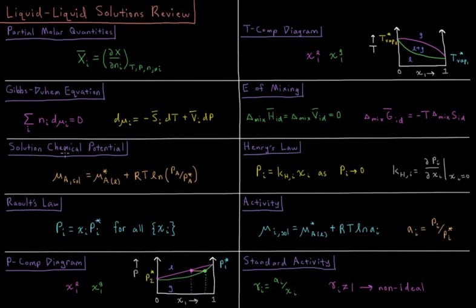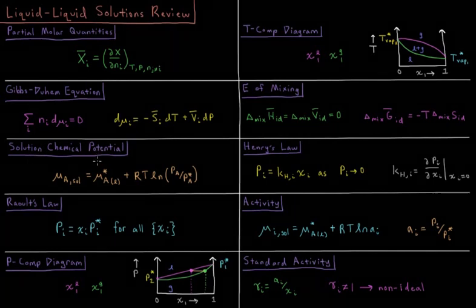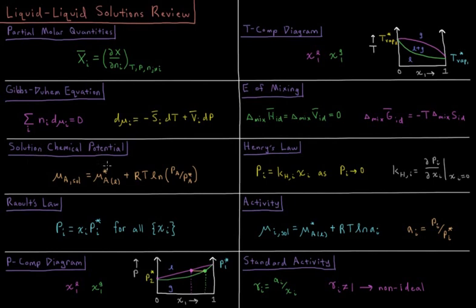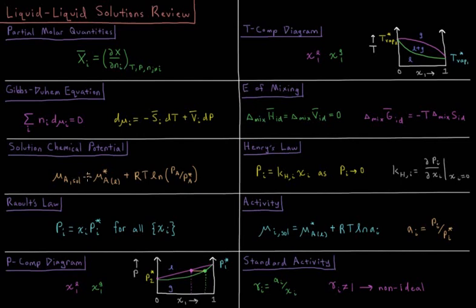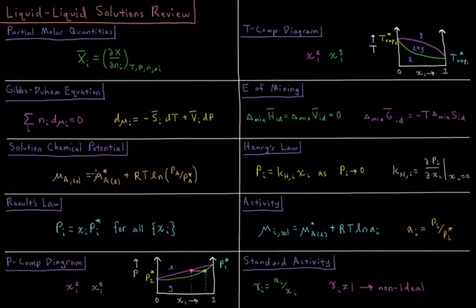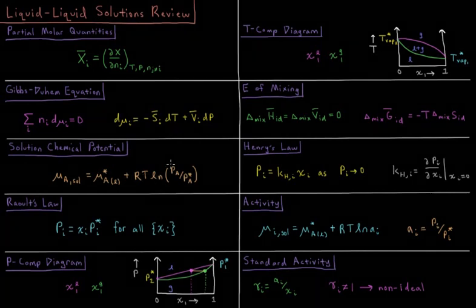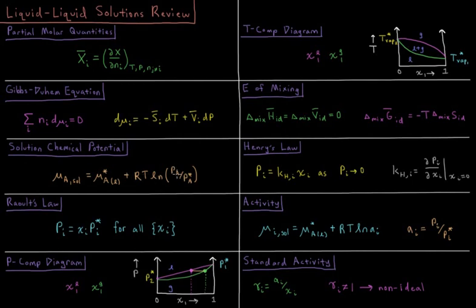We can get the chemical potential of a given substance in solution by relating it to the chemical potential in its vapor phase, where the chemical potential in solution is equal to the chemical potential of a pure liquid, pure indicated by the star, plus RT times the natural log of the vapor pressure of that substance divided by the vapor pressure of its pure liquid under those same conditions.